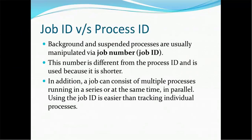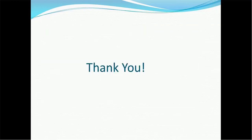Regarding job ID versus process ID: background and suspended processes are usually manipulated via job ID. This number is different from the process ID and is usually used because it is shorter. In addition, a job can consist of multiple processes running in a series or at the same time in parallel. Using the job ID is easier than tracking individual process IDs.